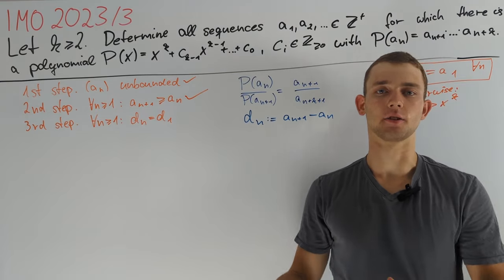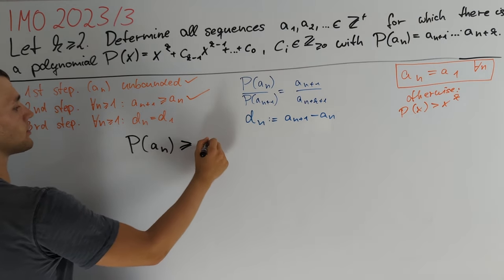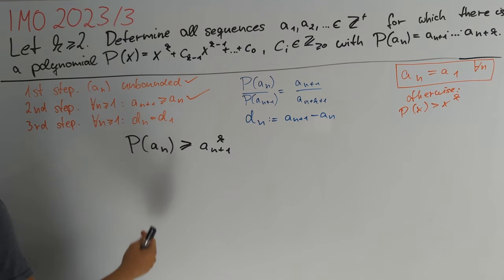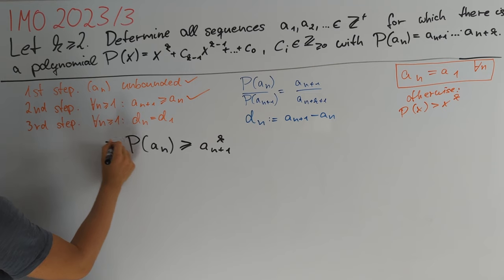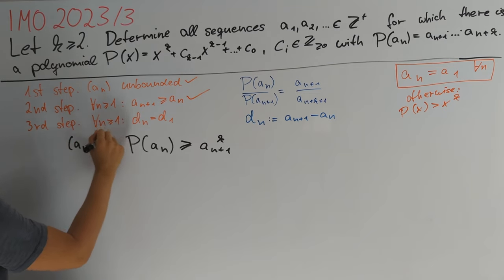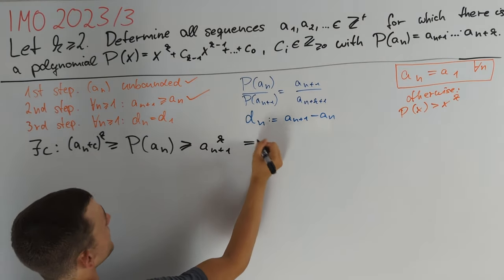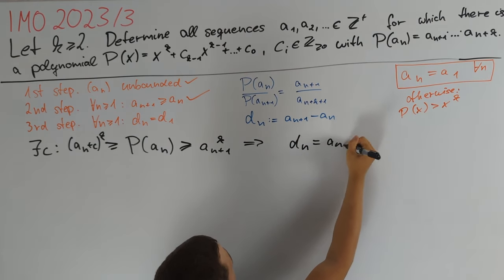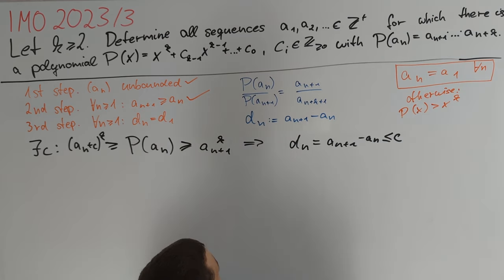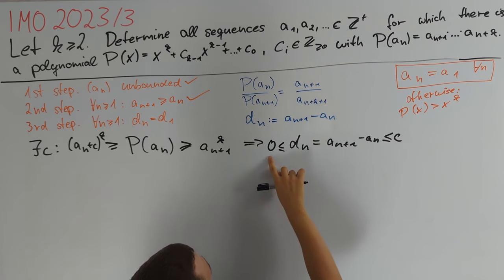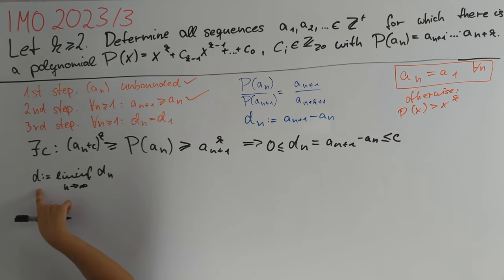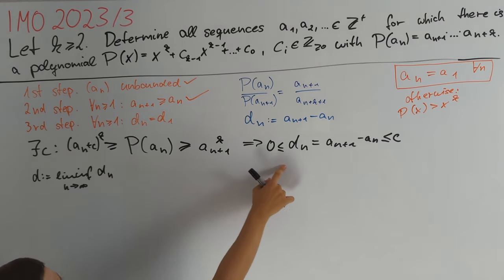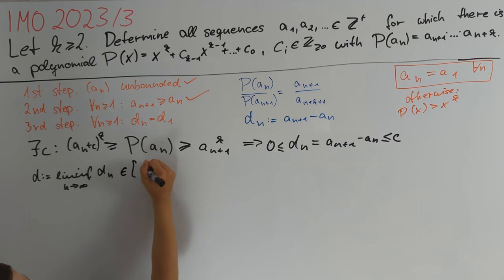Now we show that d_n is eventually constant. Since we can bound all terms from below by a_{n+1}, we get p(a_n) greater than or equal to a_{n+1}^k. Given our sequence a_n, we can find a polynomial p(x) of degree k with leading coefficient 1, and we can bound p(a_n) from above by (a_n + c)^k for some constant c. Taking the k-th root on both sides gives d_n equals a_{n+1} minus a_n, which is less than or equal to c. Combining this with the previous step, d_n can only attain finitely many values between 0 and c. So we define d to be the limit of d_n as n goes to infinity — the minimal value that d_n attains infinitely often — and d is an integer between 0 and c.